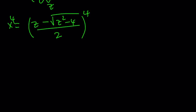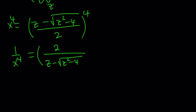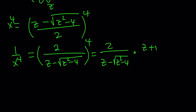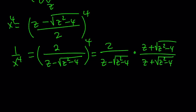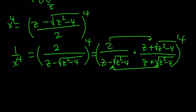Now let's find 1 over x to the fourth power. It's just the reciprocal, so you can flip it: 2 over z minus the square root of z squared minus 4, raised to the fourth power. But here we can multiply by conjugates. We write this as 2 over z minus square root of z squared minus 4, multiplied by z plus the square root of z squared minus 4, divided by the same thing — which equals 1 — and then raise to the fourth power. So let's find 1 over x to the fourth from here: 2 times z plus square root of z squared minus 4.